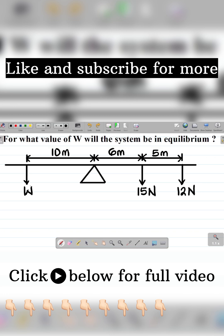Now, for this diagram here, we're asked to find the value of W for this system to be in equilibrium. And for equilibrium, we said the sum of the clockwise moments will be equal to the sum of the anticlockwise moments.